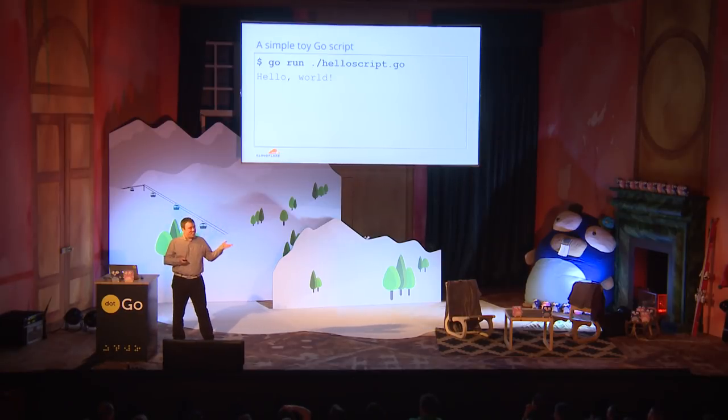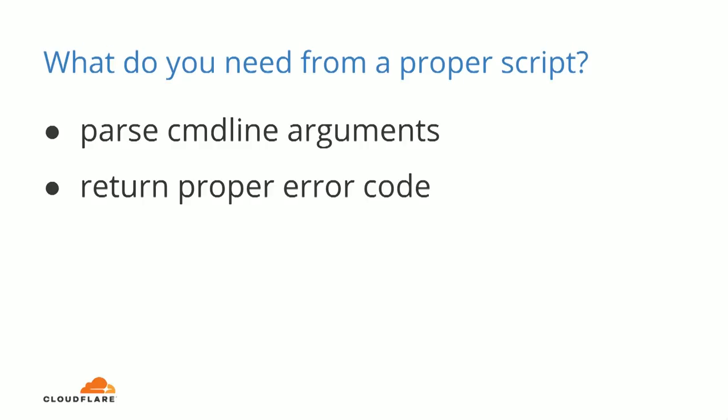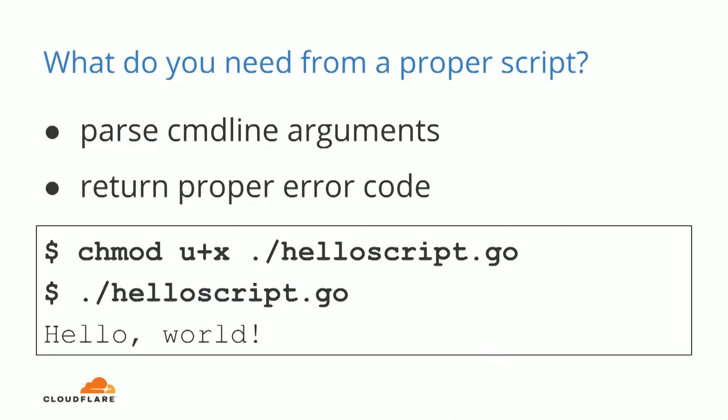You can run your Go script, but we need more from a script. We need a script to be able to parse command line arguments. We also need the script to return proper error codes to the operating system, because oftentimes you chain scripts in a complex pipeline, and return codes are the way they interact with each other and with the operating system. And also, you don't want to be typing go run every time you run your Go script — you want to just set the executable bit and execute it as a regular file.